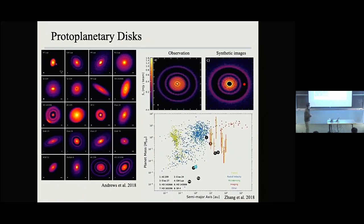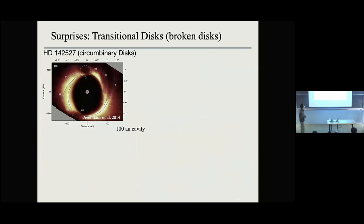While we are working on these detailed comparisons, we also have many surprises. One of the surprises comes from these transitional disks — disks with very large cavities and holes. If you think these cavities and holes are produced by giant planets or a binary, then that means we have a lot of surprises coming from circumbinary disks.